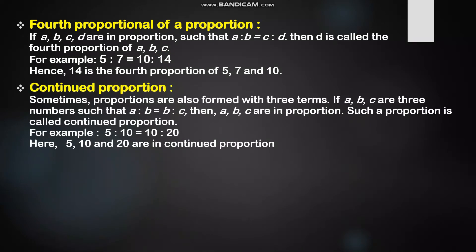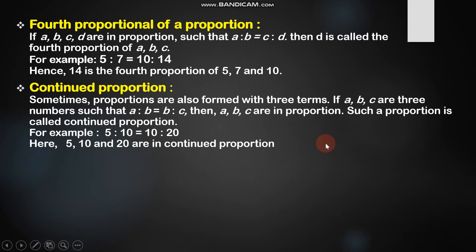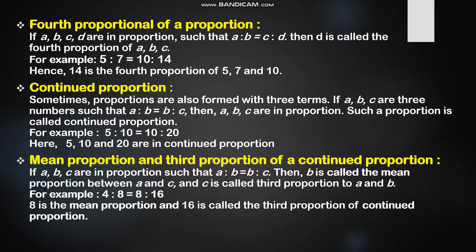The next term is continued proportion. If there are three terms, we call it a continued proportion, and the middle term is repeated. If A, B, C are three terms such that A ratio B is proportional to B ratio C, then A, B, C are in continued proportion. For example, 5 ratio 10 is proportional to 10 ratio 20, so 5, 10, and 20 are in continued proportion.